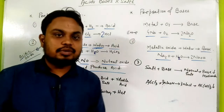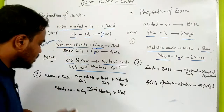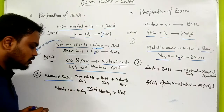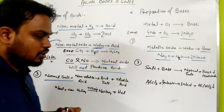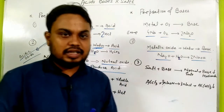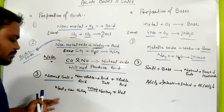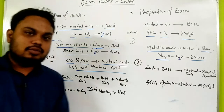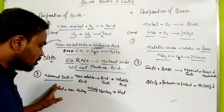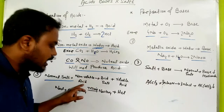Now let's look at the third preparation. Normal salt — what we commonly know as normal salt — is ionic in nature. HCl is the best example. When normal salt reacts with a non-volatile acid, a reaction takes place.